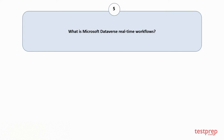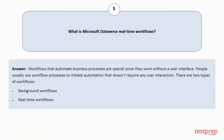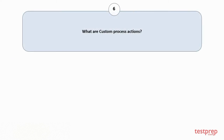Question number 5: What is Microsoft Dataverse real-time workflows? Workflows that automate business processes are special since they work without a user interface. People usually use workflow processes to initiate automation that doesn't require any user interaction. There are two types of workflows: 1. Background workflows. 2. Real-time workflows.